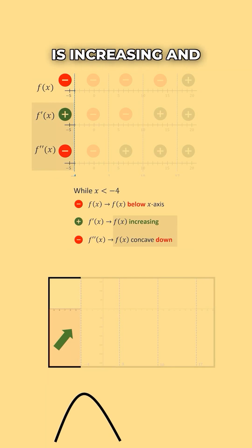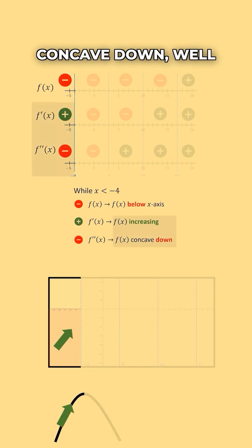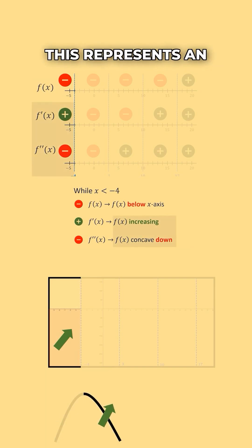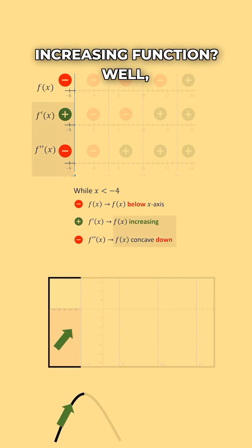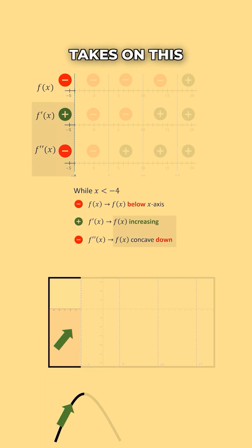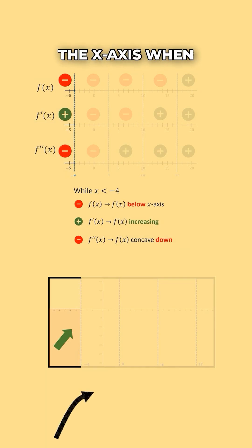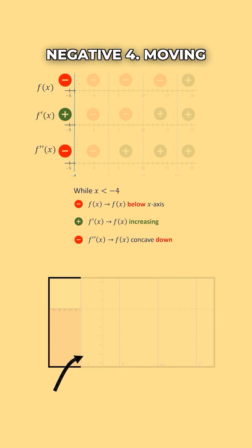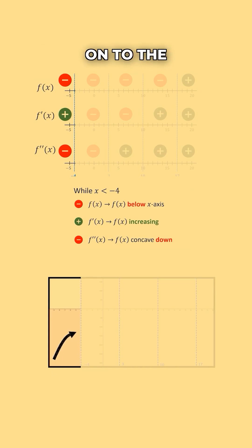Our function is increasing and concave down. Which side of this represents an increasing function? It would be this half. And so our function takes on this shape, and it will be below the x-axis when x is below negative 4.